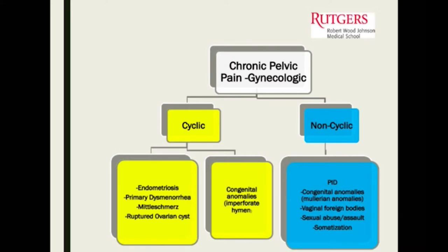Some of the cyclic ones are endometriosis, primary dysmenorrhea, mittelschmerz — the ovulation pain that some women get every month — and sometimes ruptured ovarian cysts, although they don't tend to be every single month.